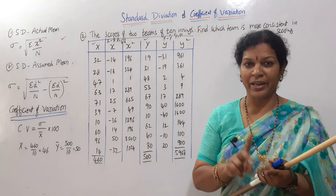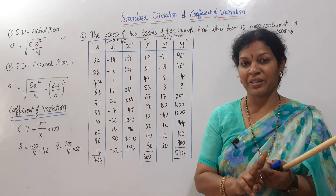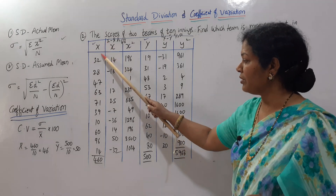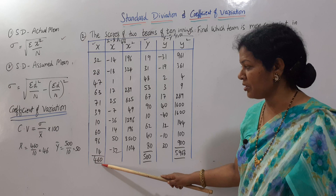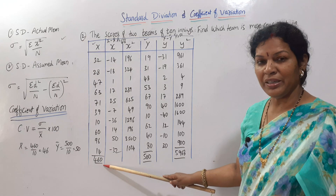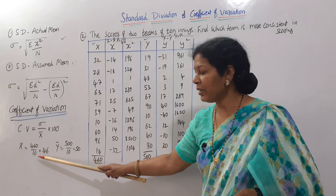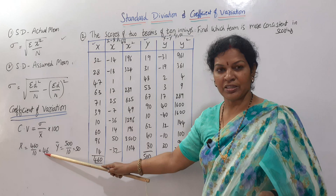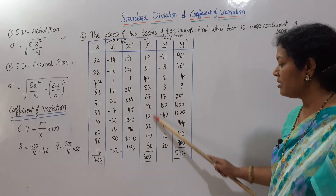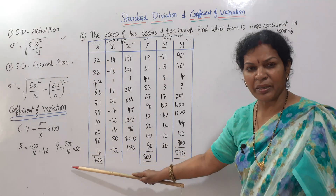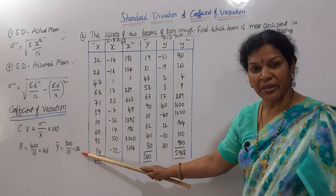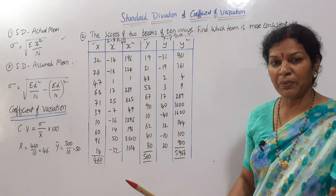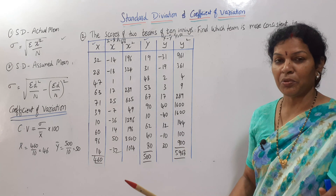The CV formula is rho by x̄ into 100, so we need x̄ and rho. For x̄: total of X is 460, divided by n which is 10, so x̄ = 46. For ȳ: total of Y is 500, divided by 10, so ȳ = 50. Now we need the standard deviation.